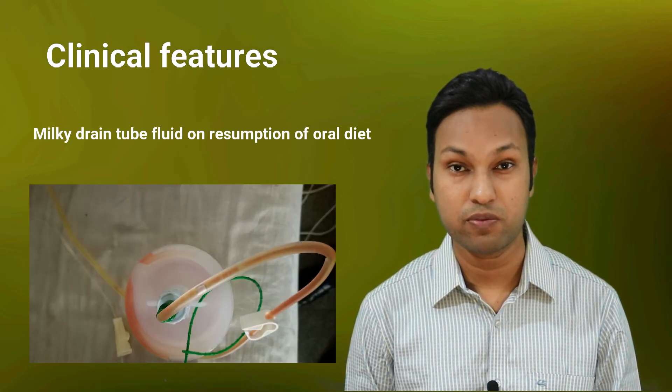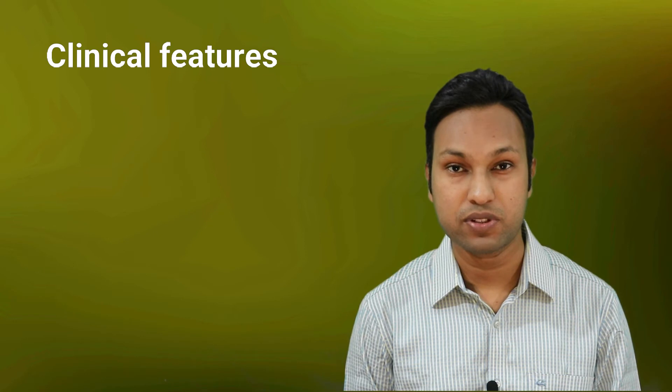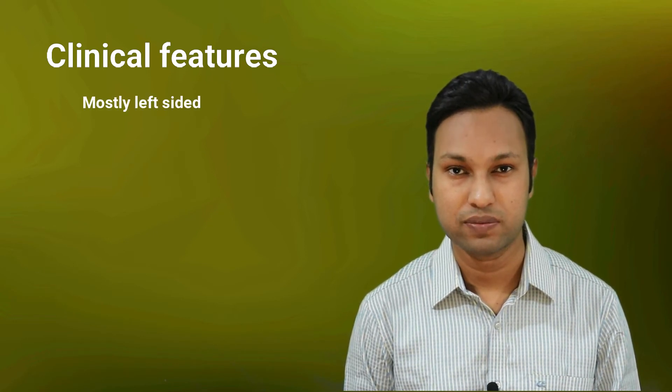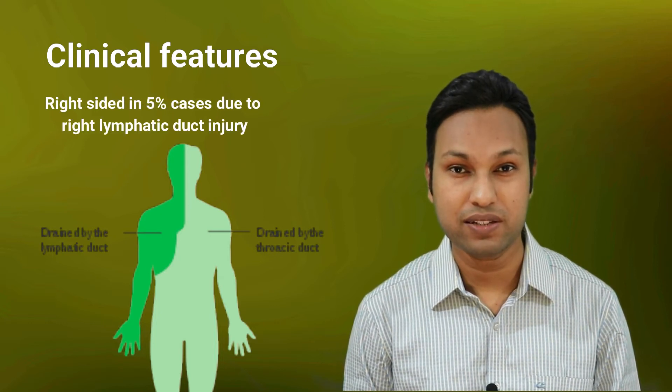Chyle's fistula becomes evident in the post-operative period when the patient starts oral feeding. The drain fluid looks milky in nature and increases in quantity gradually. As the thoracic duct drains at the left side of the neck, most chyle fistulas are left-sided, but it can also occur on the right side in five percent of cases due to injury of the right lymphatic duct.